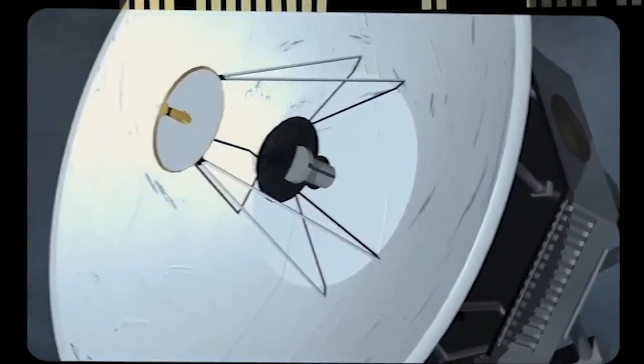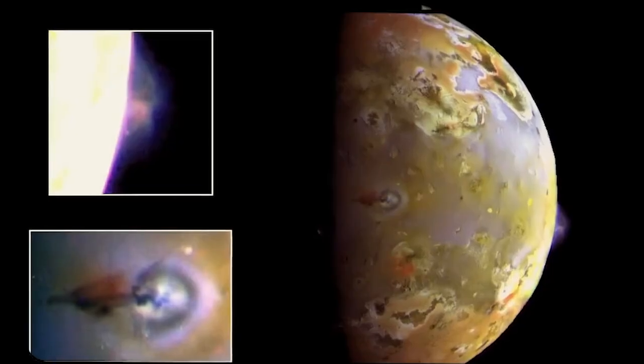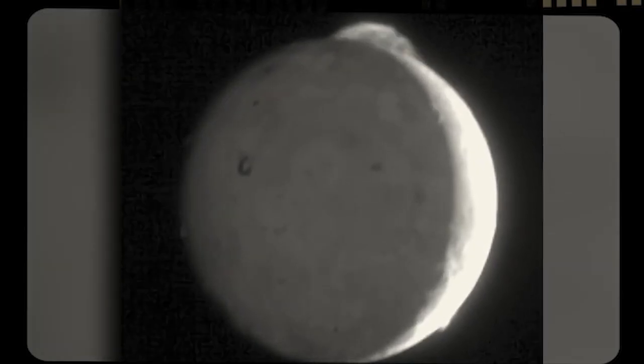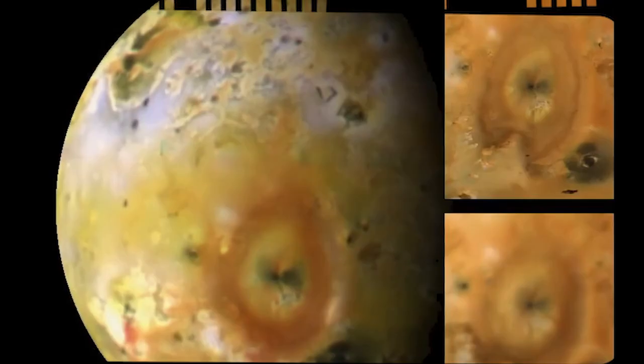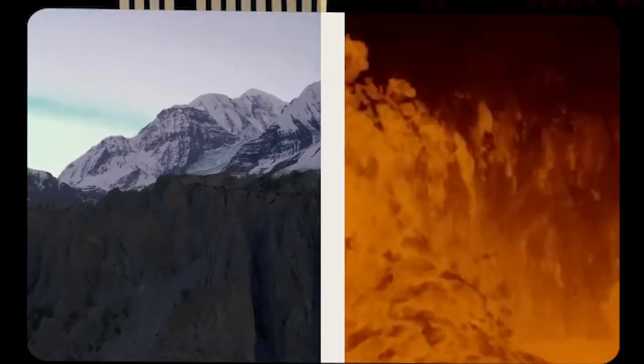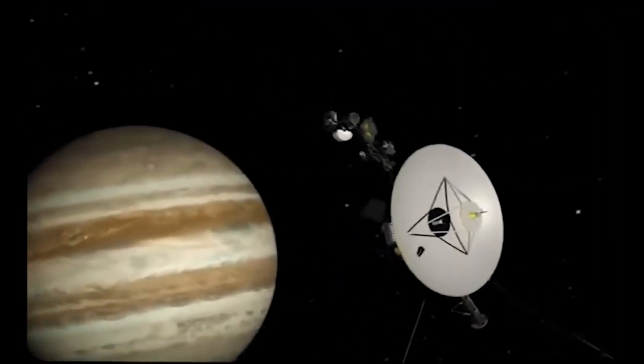The Voyager spacecraft, during its mission, delivered a visual feast of over 33,000 images capturing the breathtaking beauty of Jupiter and its moons. These visuals provided not only an unprecedented look at the gas giant, but also showcased the diverse landscapes of its moons, enriching our understanding of the solar system's largest planet.